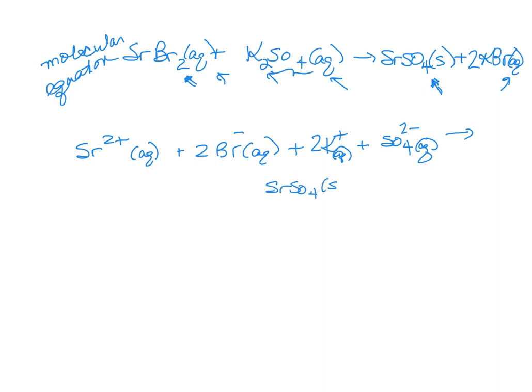Strontium sulfate stays intact. It is not soluble, so it doesn't dissociate into the ions. And then this coefficient of two applies to both atoms in the ionic compound. So, I have two potassium and two bromide. That is your total ionic equation.